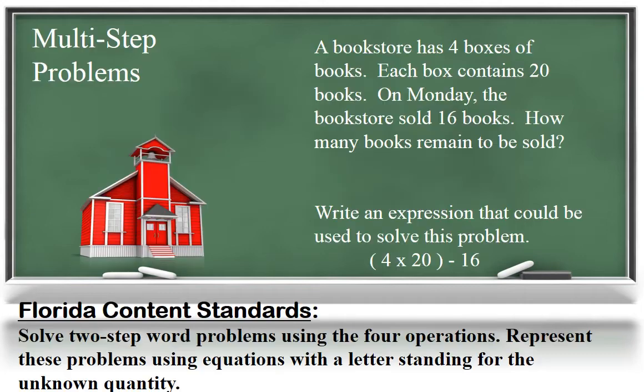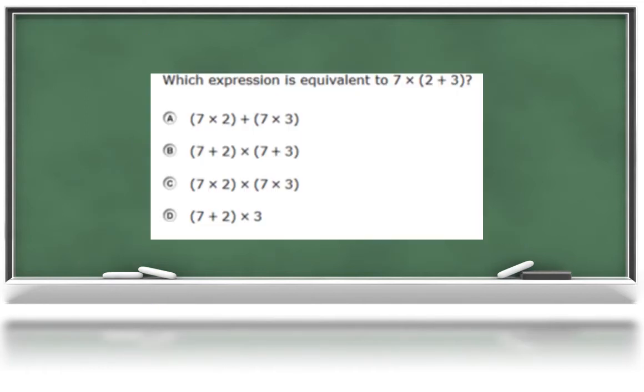Another third grade standard deals with solving two-step problems using the four operations. They will have to write equations and expressions that model the actions in the problem. It's important for your child to read and visualize these problems in order to determine the actions and operations needed to help solve the problem. Sometimes it is helpful to model the problem first before solving. A bookstore has four boxes of books. Each box contains 20 books. On Monday, the bookstore sold 16 books. How many books remain to be sold? Write an expression that could be used to solve this problem. The expression could be four groups of 20 decreased by 16.